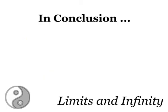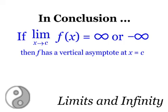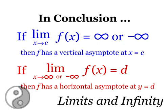In conclusion, if the limit as x approaches c of f(x) is infinity or negative infinity, then f has a vertical asymptote at x equals c. Whereas if the limit as x approaches infinity of f(x) equals d, then f has a horizontal asymptote at y equals d.